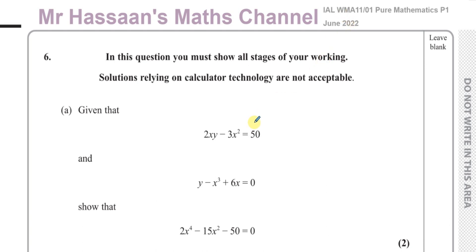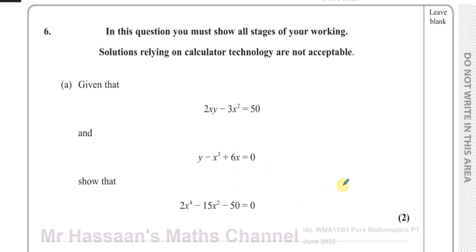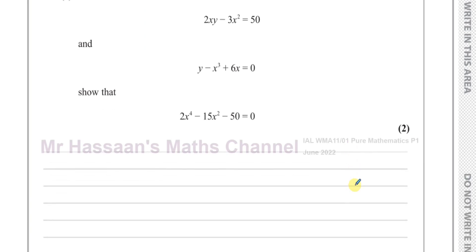In this question, we have a pair of equations and we have to, first of all, show that these equations will lead to a third equation. These are a pair of simultaneous equations, and part A is asking us to combine these two equations together to give this one equation. We do that by substitution.